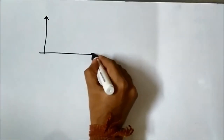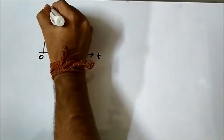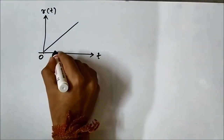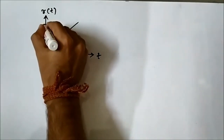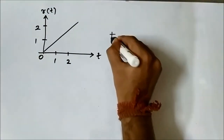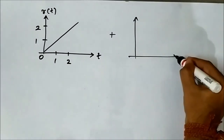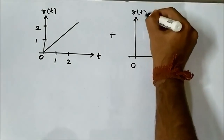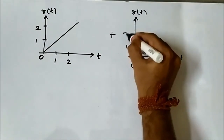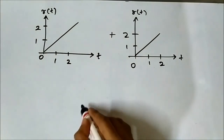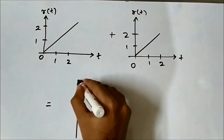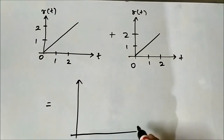Similarly, let us take 2 ramp signals with slope 1. For a ramp signal, at t=1 the amplitude is 1, at t=2 the amplitude is 2, and so on. If we add it with another same ramp signal, the result will be a ramp signal with slope equal to 2, meaning it will be amplified.